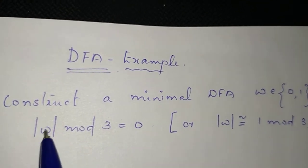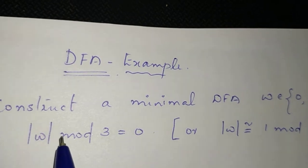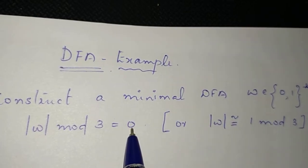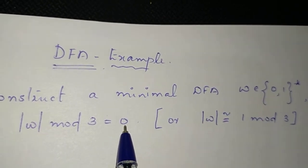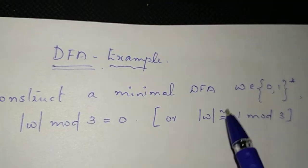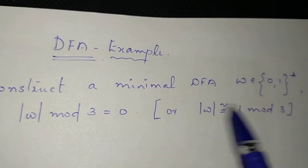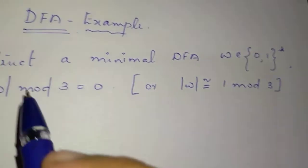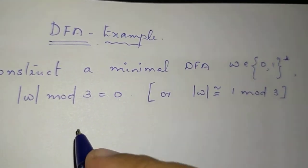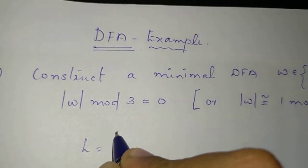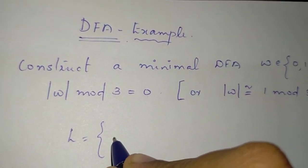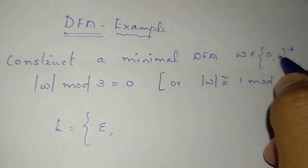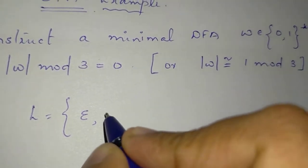This is the string number. If we do mod 3, the remainder will be 0. This is the string length. We can write the same question. So we will create the language. We will write 0 — 0 is epsilon. Then 0 and 1 gives us 0.